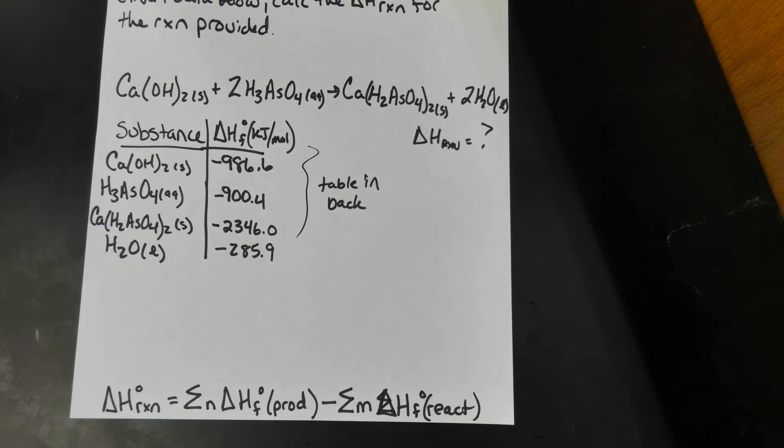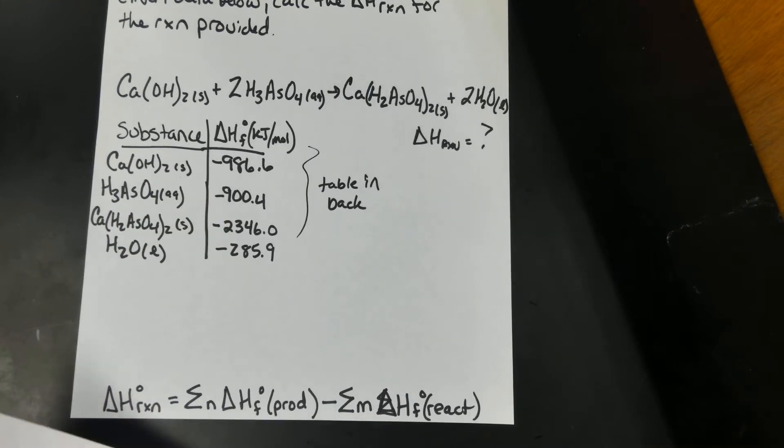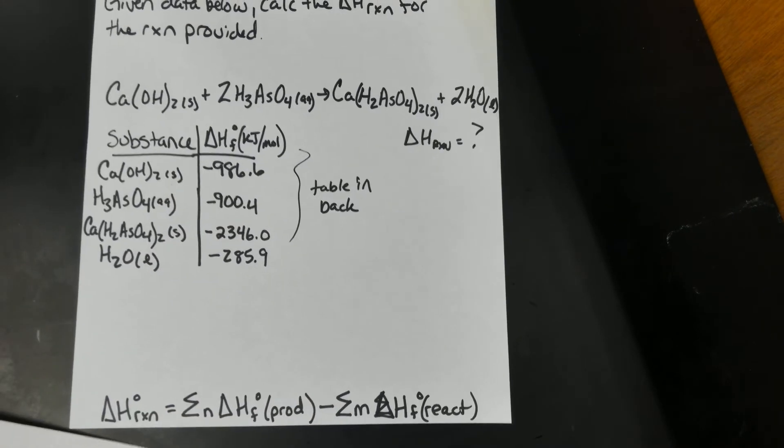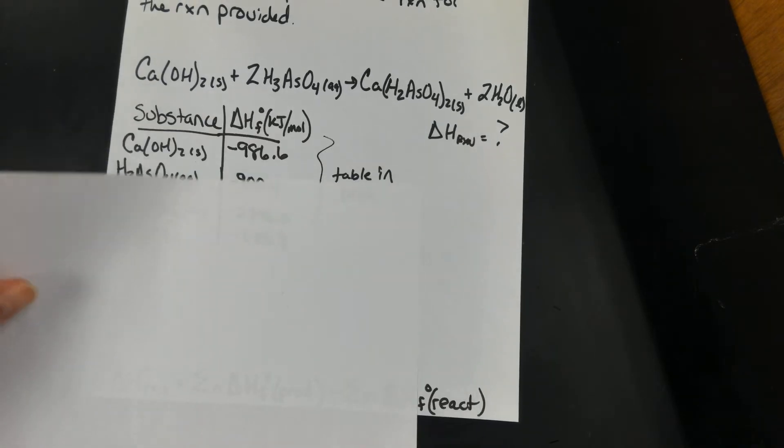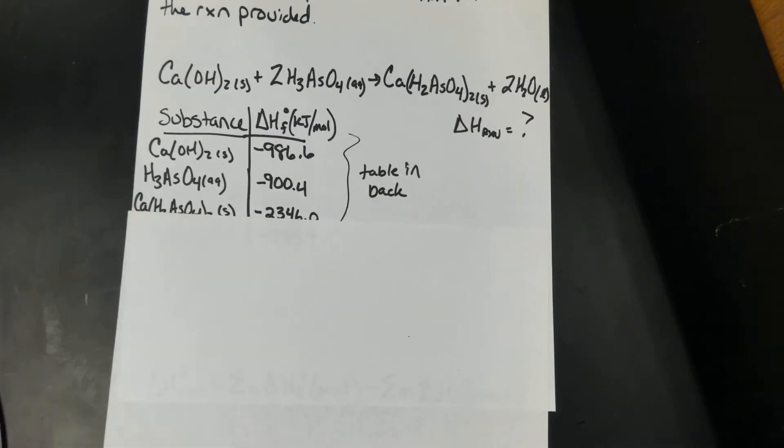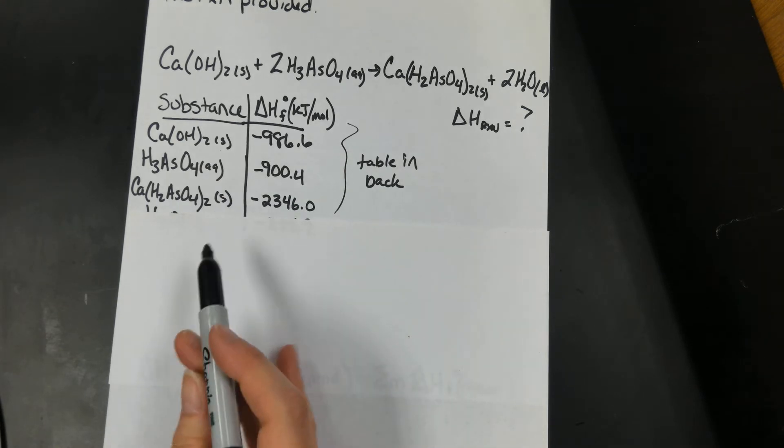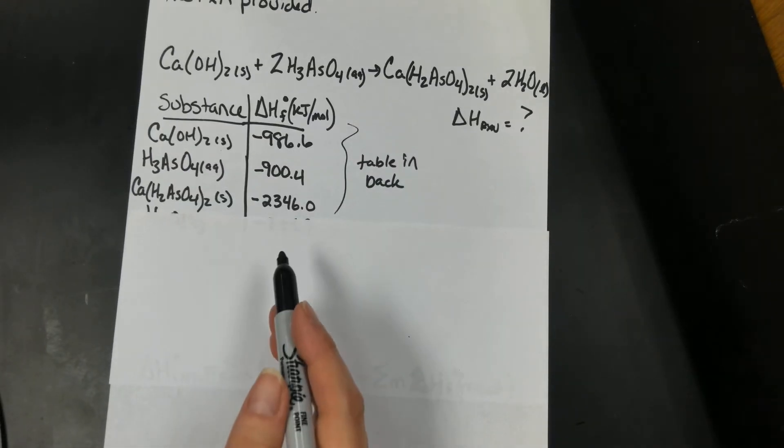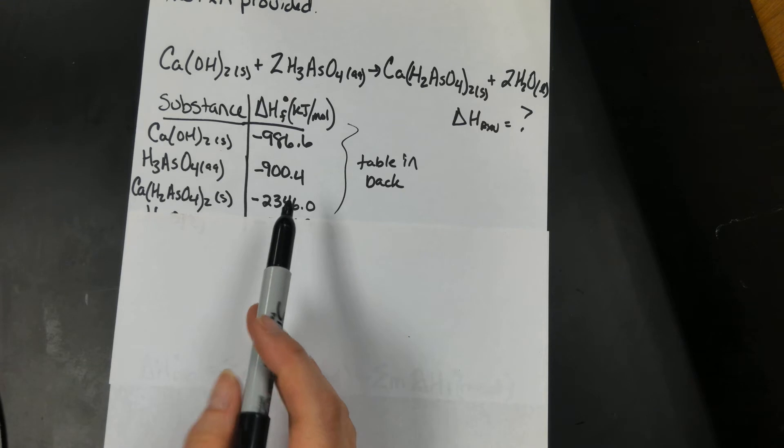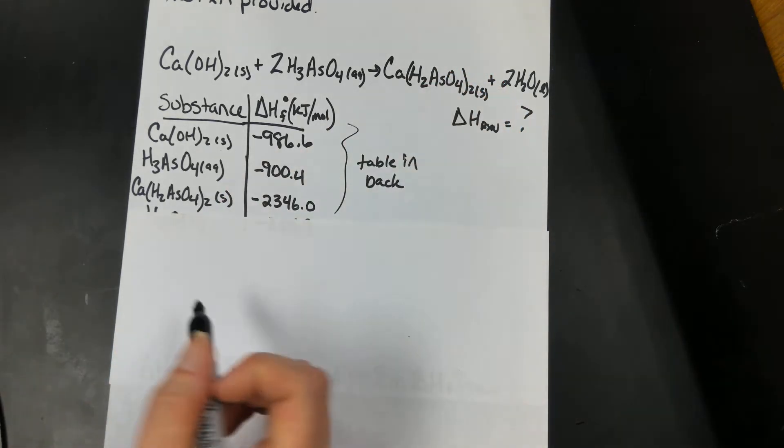I'm going to pull out another piece of paper because I think it'd just be easier to do this. So I'm going to have to have my products minus reactants, the summation of my products minus my reactants. So what are my products? Products are on the right-hand side.